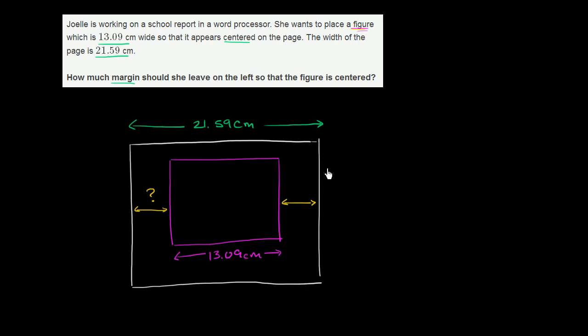So one way we could think about it, let's take 13.09 centimeters from 21.59 centimeters. If we do that, then we'll know how much leftover space this plus this combined is. Then we just want to split that space in half. We want half of it to go on the right side and half of it to go on the left side. So let's see how much the left margin and right margin combined need to be.